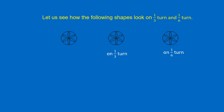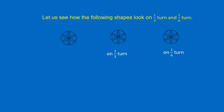Let us see another shape. On one-third turn, it looks the same. On one-sixth turn, it looks the same. So this shape looks the same on one-third turn and also on one-sixth turn.